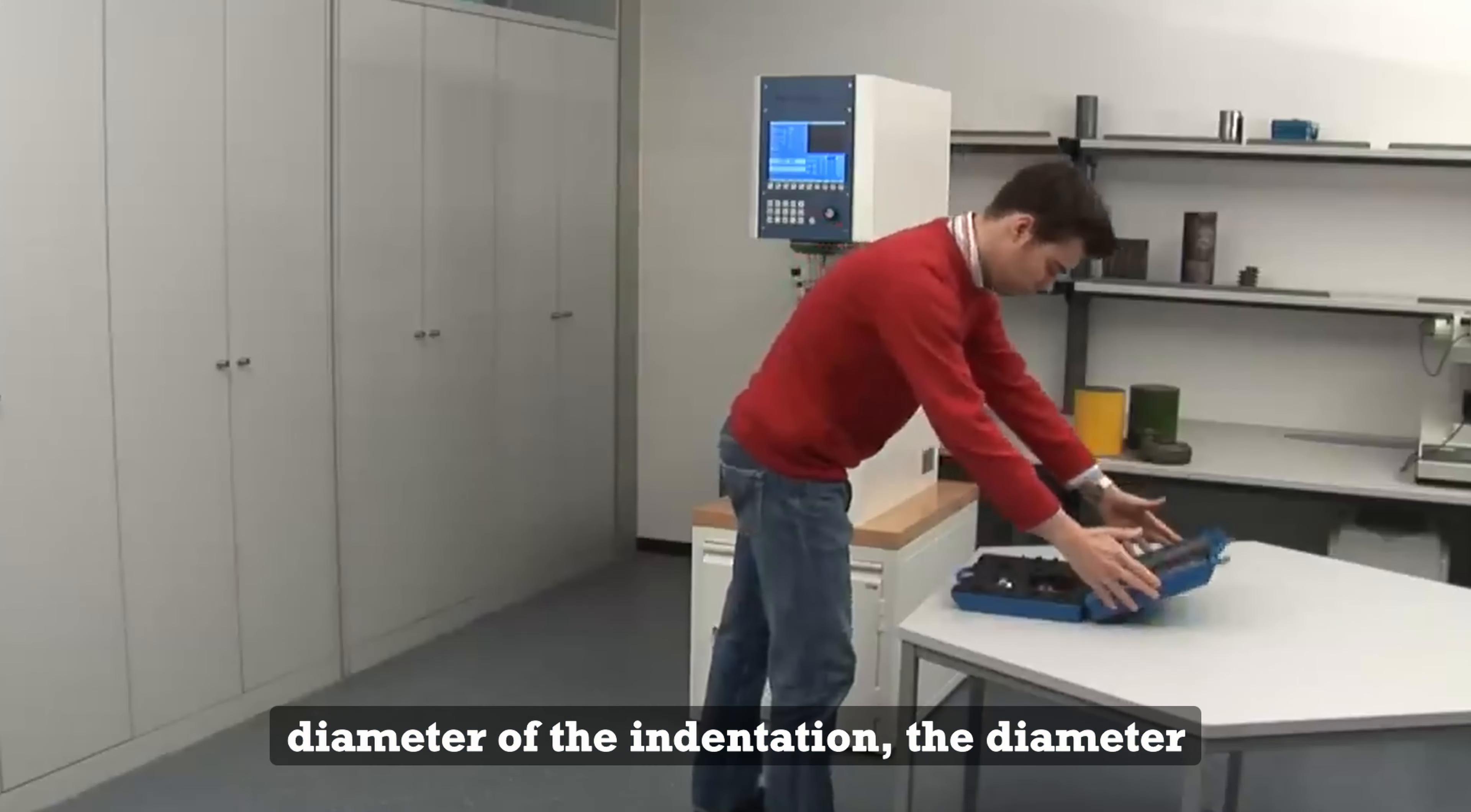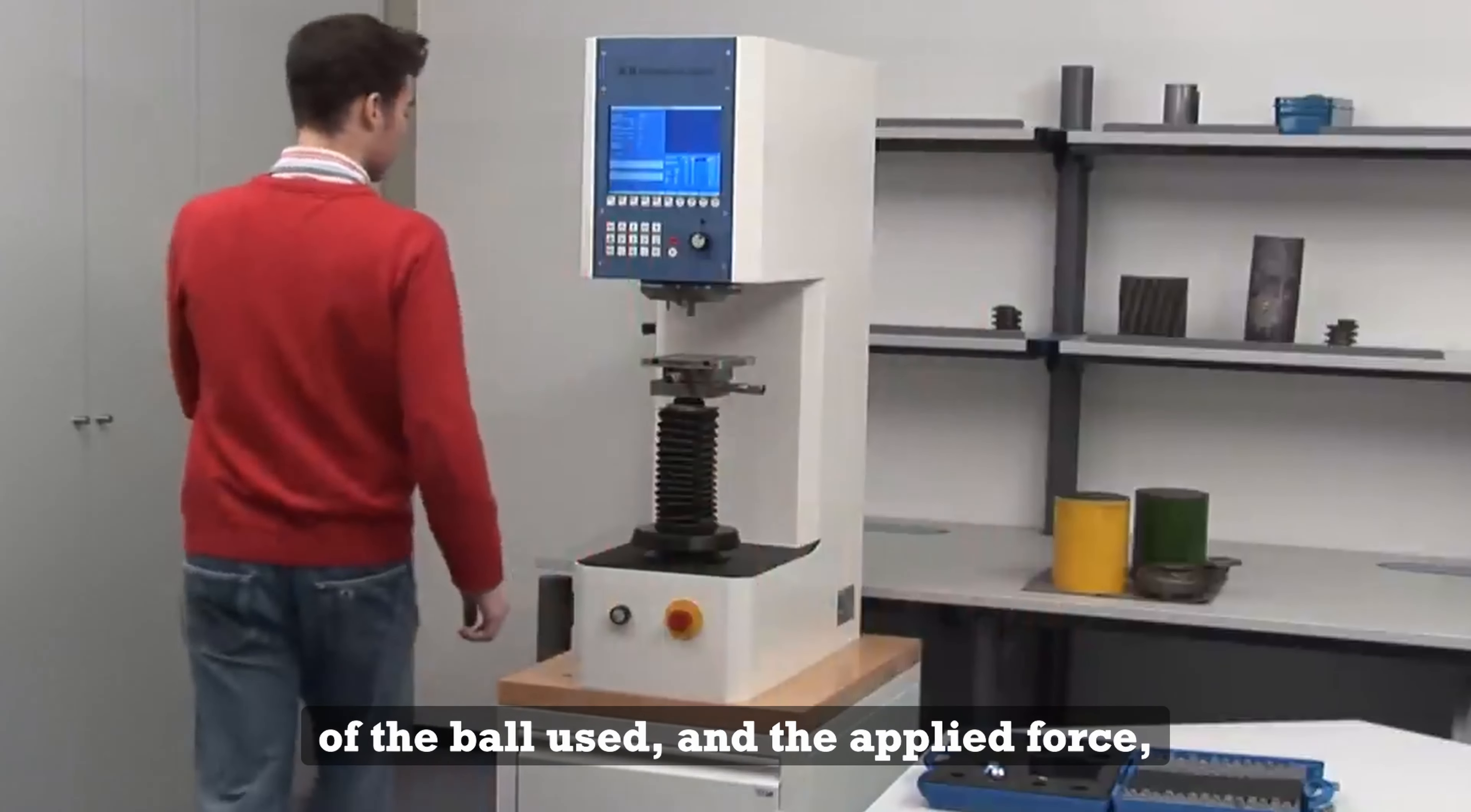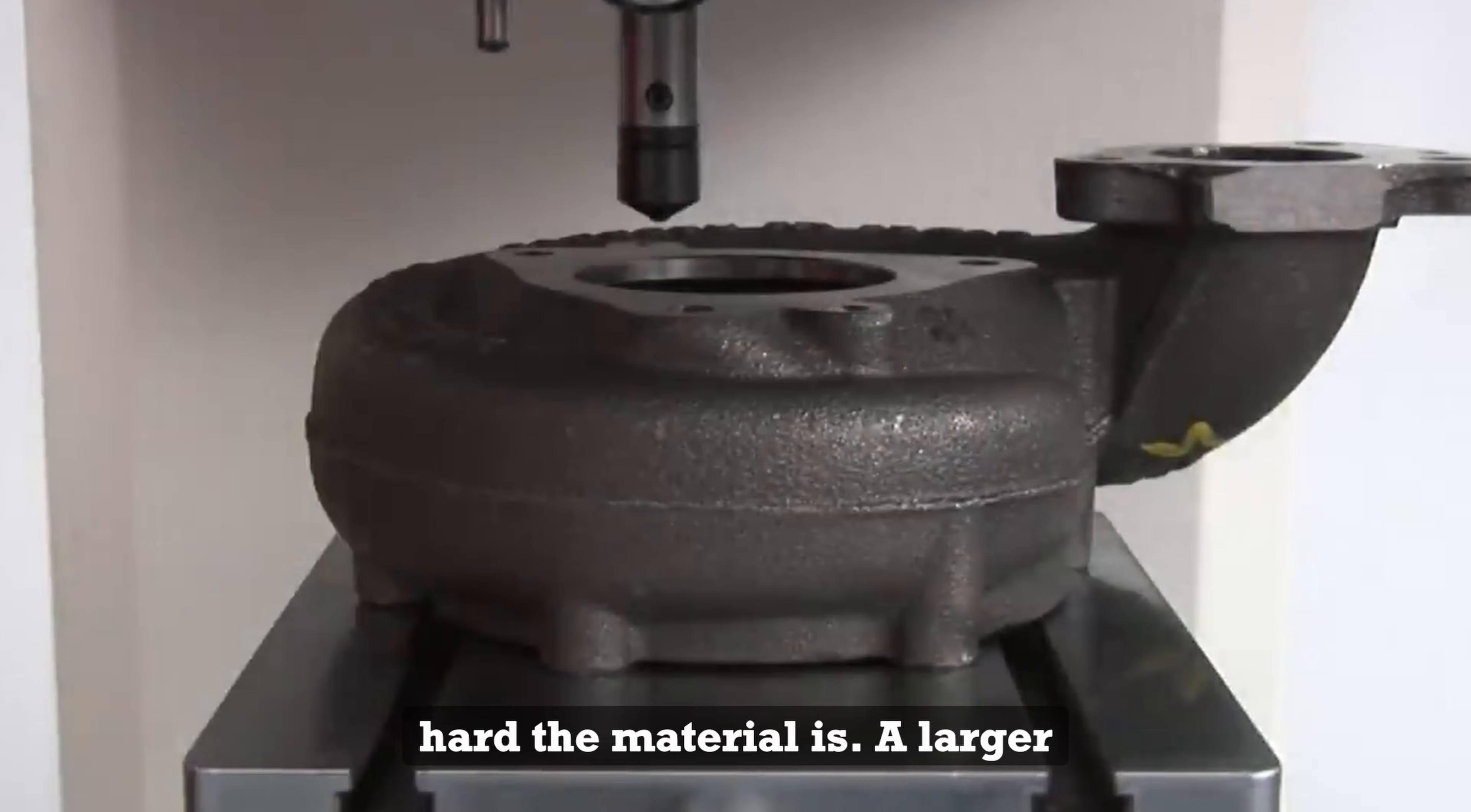By knowing the diameter of the indentation, the diameter of the ball used, and the applied force, we can calculate the Brinell hardness number. This number reflects how hard the material is.